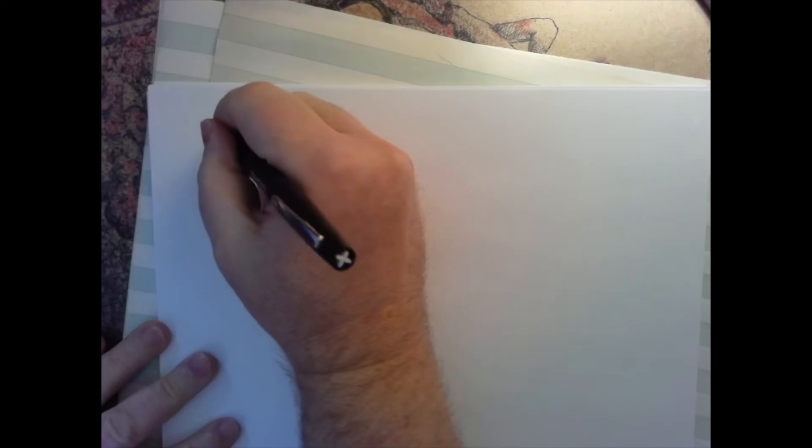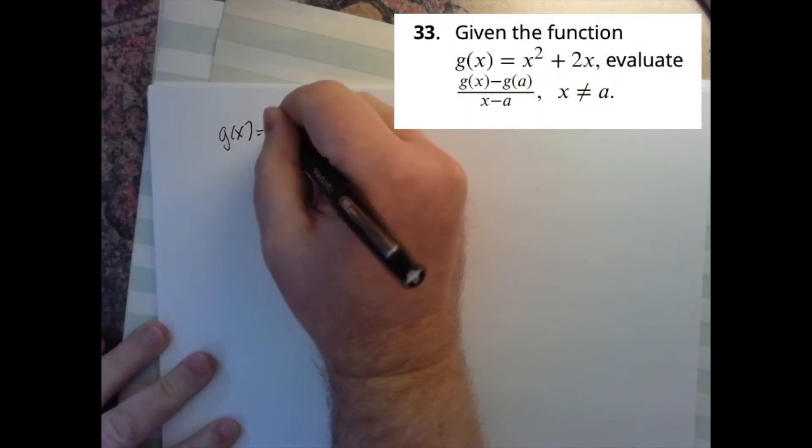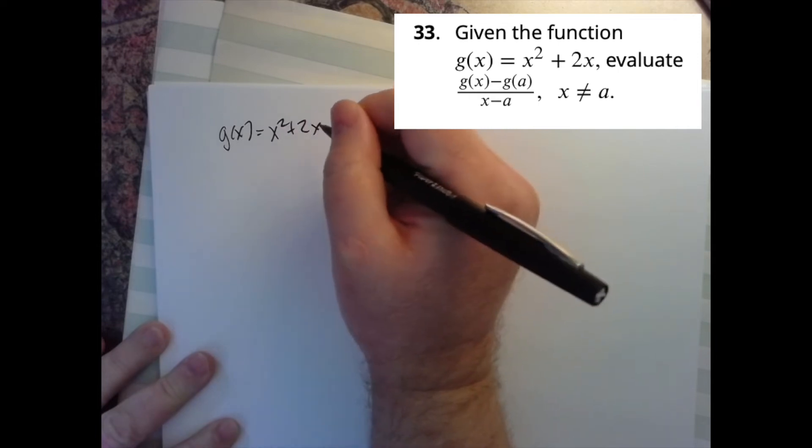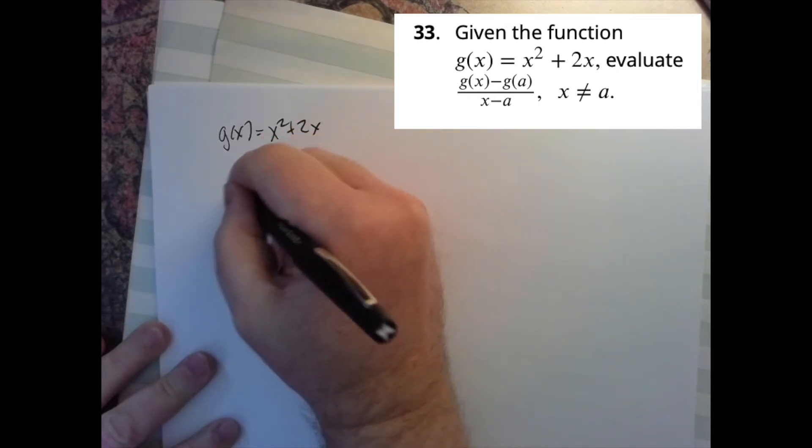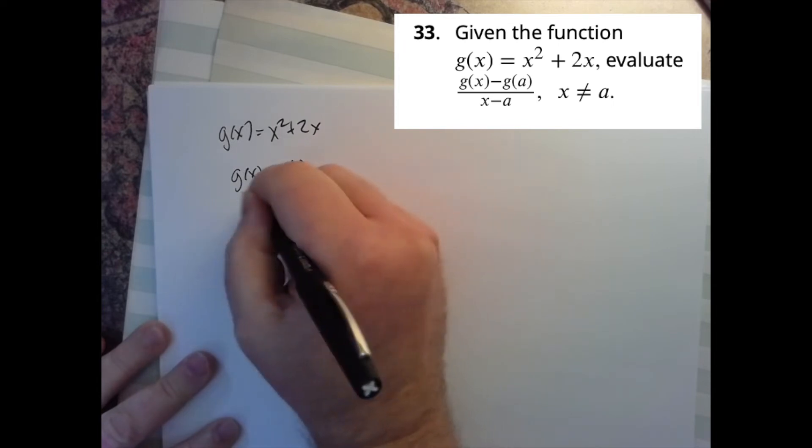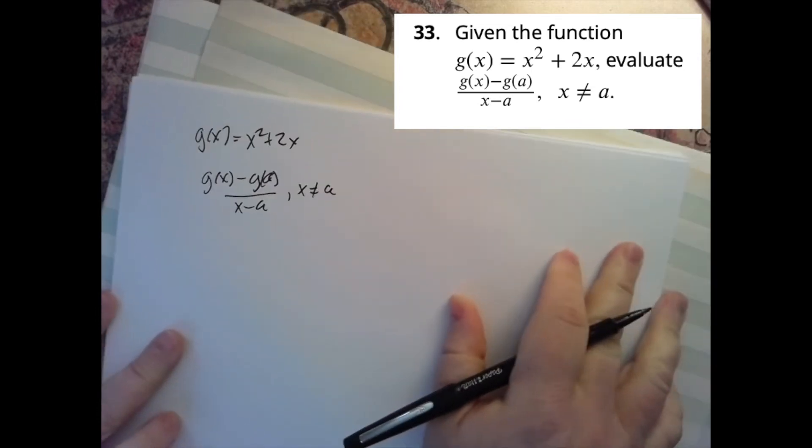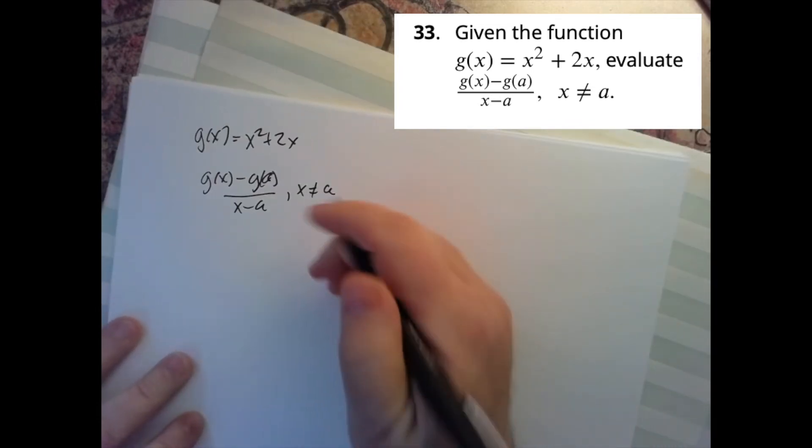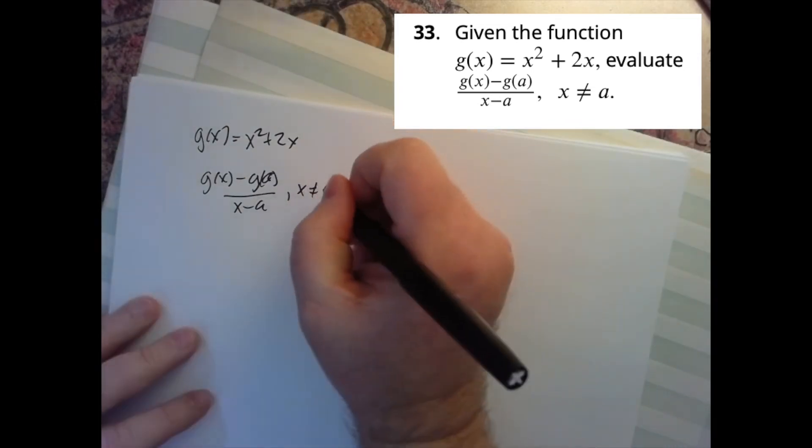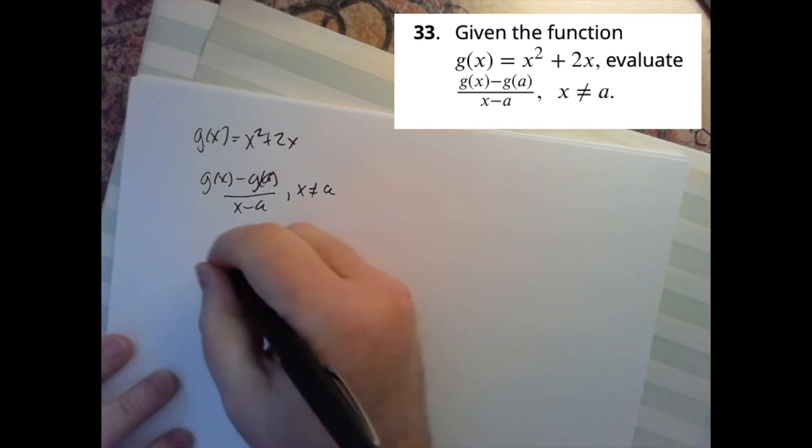Let's try this one. So I have g(x) is equal to x squared plus 2x. And we're supposed to evaluate g(x) minus g(a) over x minus a and x is not equal to a. Sorry about the sloppy handwriting there. So really this is to make sure that you're not dividing by zero and that's just kind of the key thing.